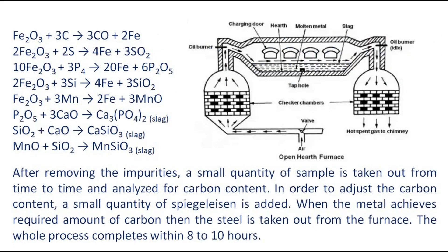After removing the impurities, a small quantity of sample is taken out from time to time and analyzed for carbon content. In order to adjust the carbon content, a small quantity of spiegeleisen is added. When the metal achieves the required amount of carbon, the steel is taken out from the furnace.